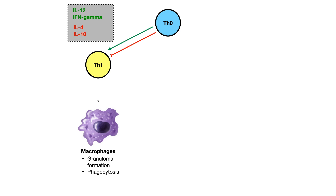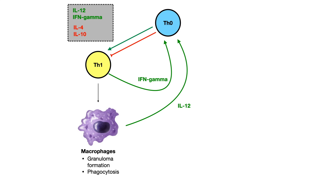Something important for USMLE and COMLEX: the macrophage produces IL-12 and the TH1 cell produces interferon gamma. Because both IL-12 and interferon gamma promote the differentiation of TH0 into TH1 cells, this is a positive feedback pathway. The more IL-12 from macrophages causes more TH0 to become TH1, and the more interferon gamma from TH1 causes even more TH0 to become TH1. This cascade compounds and leads to more TH1 and more macrophage activity. This is very high yield to understand.